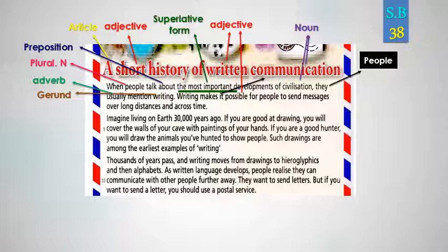Imagine living on earth thirty thousand years ago — تخيل أنك تعيش على الأرض منذ ثلاثين ألف سنة. Where did people live and how did they communicate? Here 'living' is a gerund. If you are good at drawing — إذا كنت جيداً في الرسم — you will cover the walls of your cave with paintings of your hands — فسوف تغطي جدران كهفك بالرسومات.